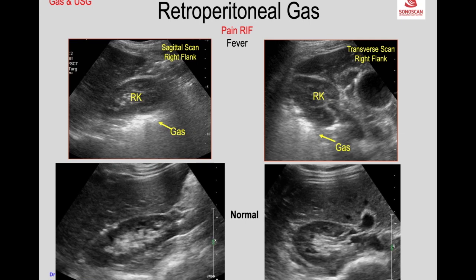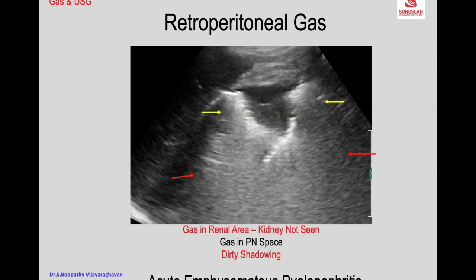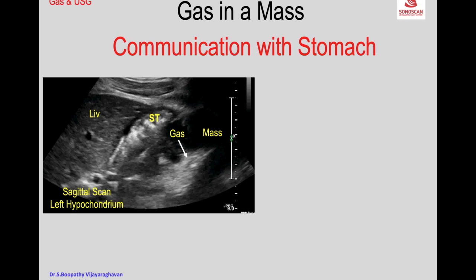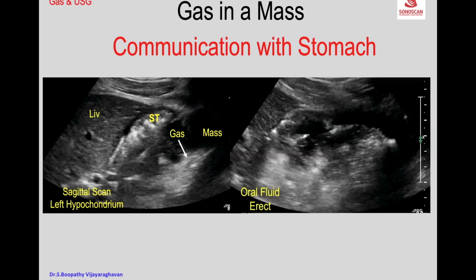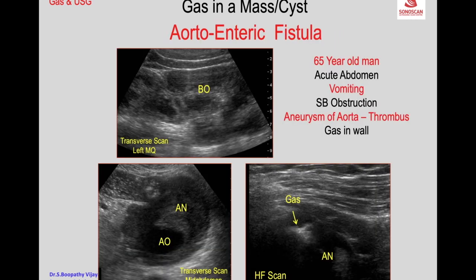This is a lecture on diverticulitis. To confirm, there is gas posterior to the right kidney. Coming a little lower down you see an abscess on the right side. In the center of the mass you see gas, and on giving oral fluid you see displacement of the gas with fluid, confirming it is a GIST. On cross-section you see the bowel with two lumens — the native lumen and the lumen of the bowel loop.